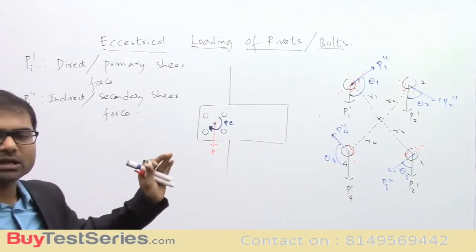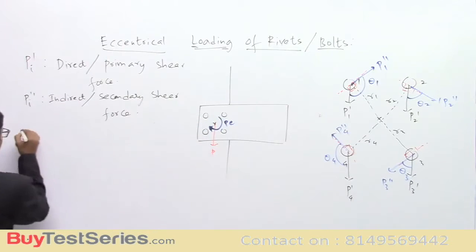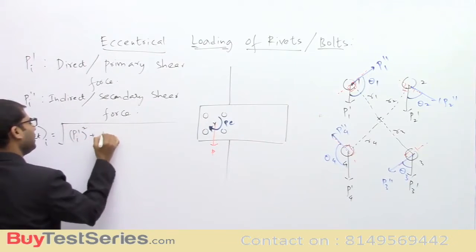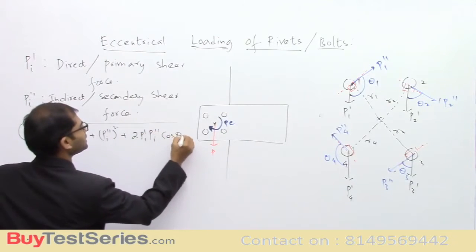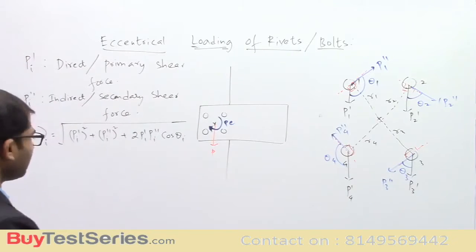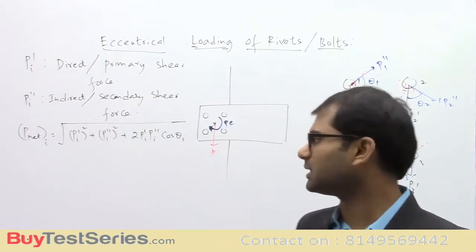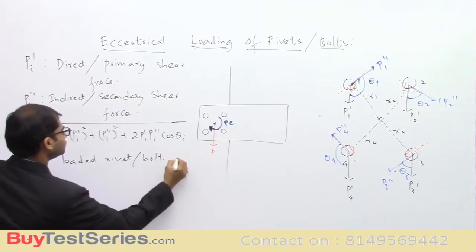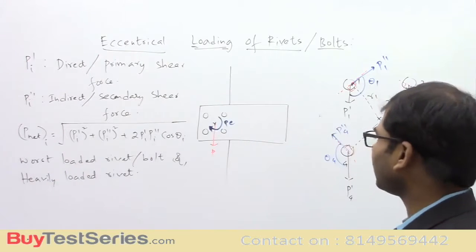Since two forces act on each rivet, the net force on the i-th rivet is found by their vector sum: P_net(i) = √[(Pi')² + (Pi'')² + 2·Pi'·Pi''·cosθi]. Out of all rivets, whichever experiences the highest value of P_net is called the worst loaded rivet or heavily loaded rivet. In most questions, you are asked to identify the worst loaded rivet and find the corresponding load on it.